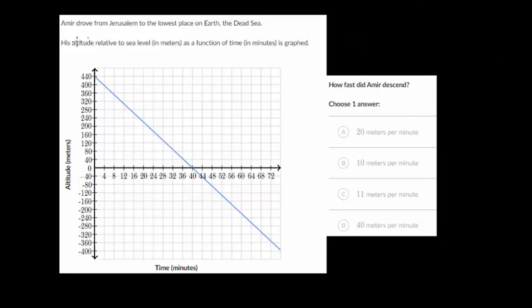In this one, we have Amir drove from Jerusalem to the lowest place on Earth, the Dead Sea. His altitude relative to sea level, which is in meters, so that's our vertical axis, as a function of time, which is in minutes, is graphed.